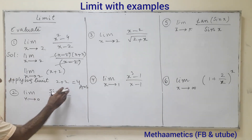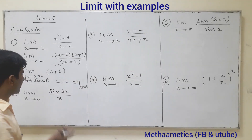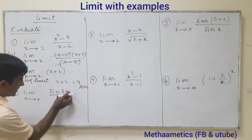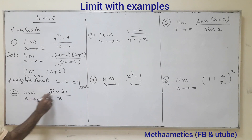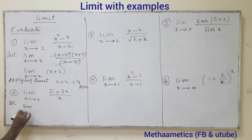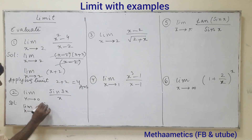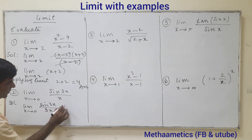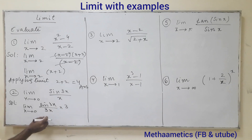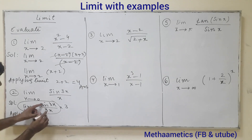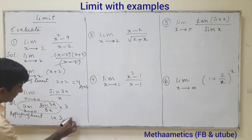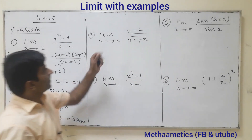Question 2: We know that limit as x tends to 0 of sin x upon x is 1. Here we need to make the denominator match sin 3x. So we write: limit x tends to 0 of (sin 3x upon 3x) multiplied by 3 — we have multiplied and divided by 3. This equals 1 times 3, which is 3. That's the answer.